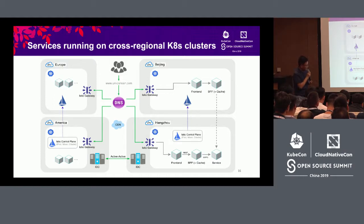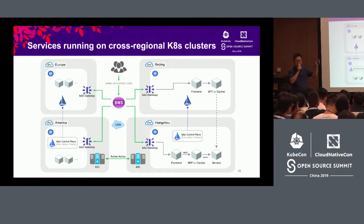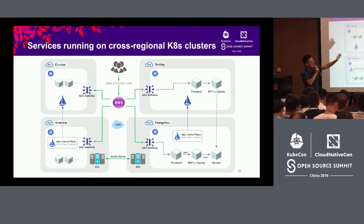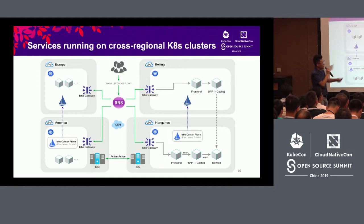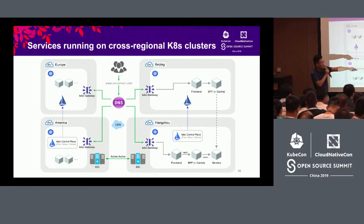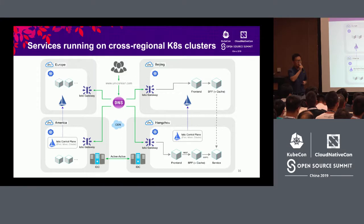Going through our solution: first, we connect the clusters' networks to the same layer using a specific client configuration. For example, in Beijing, the BFF makes a request to a service in Hangzhou. The load balancing is already completed in Beijing — we've determined which service endpoint to go to. We then connect the network between the clusters, making requests to pods in the remote cluster via multi-cluster functionality. We use Alibaba Cloud to achieve this.